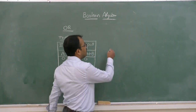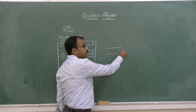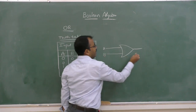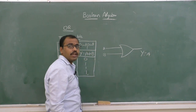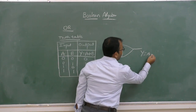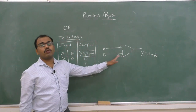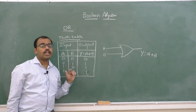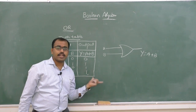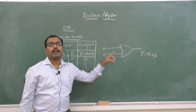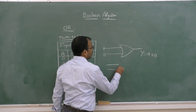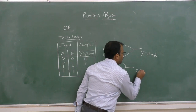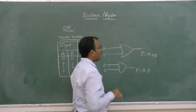For the logic symbol of OR gate: it has two inputs a and b and output y is equal to a plus b, which we read as 'a OR b'. Inputs are on the left and output on the right. AND operation performs Boolean multiplication, NOT operation performs negation, and OR operation performs Boolean addition. Both AND and OR are binary operations requiring at least two inputs.